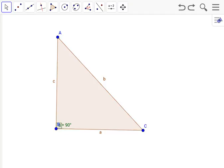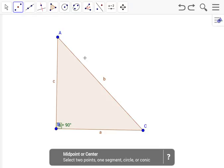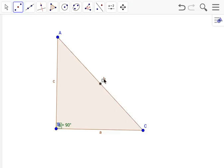So we have a handy dandy tool right here, midpoint or center tool. Let's find that and then the midpoint for AC is D which is right here.